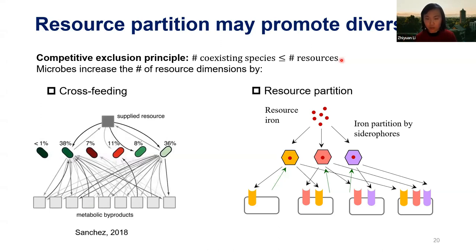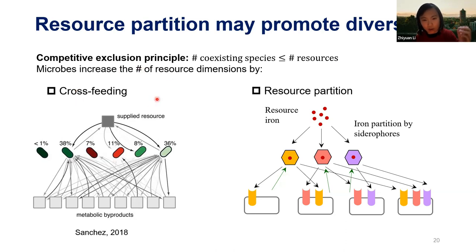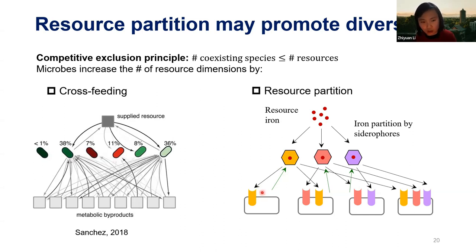This creates a long-standing contradiction: we can count carbon, nitrogen, phosphate, oxygen — just a few resource types — but we observe huge microbial diversity. Microbes have ways to increase the number of resource dimensions. One possibility is cross-feeding; another is siderophores. Siderophores are a public good for those with corresponding receptors, but they also privatize iron for those without that receptor.